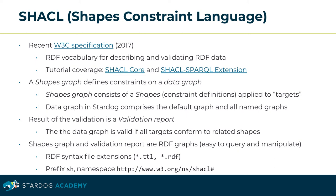The data graph is valid if all targets conform to related shapes. As the shapes graph and the validation report are RDF, they are easy to query and manipulate. SHACL files have common RDF file extensions. The commonly used namespace prefix for SHACL is 'sh'.